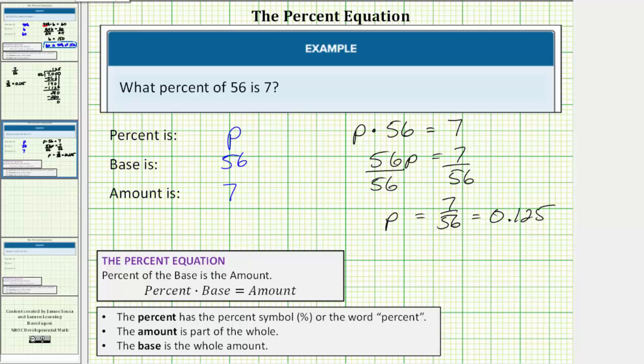To do this, move the decimal point to the right two places. So one, two. And therefore, p is equal to 12.5%.